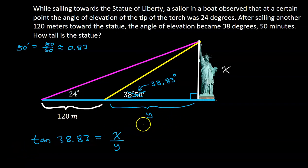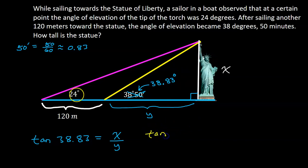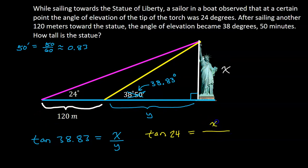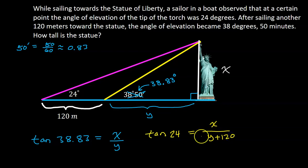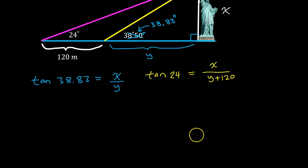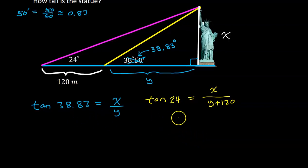Let's set up a second equation using the larger triangle. We can say that the tangent of 24 degrees is equal to opposite over adjacent. The opposite leg is still X, but the adjacent side is the entire base — the 120 and the Y together, the entire blue side — so I'm going to call this Y plus 120. Again, this equation has two variables, so by itself it could not be solved. But we can solve this as a system of equations.